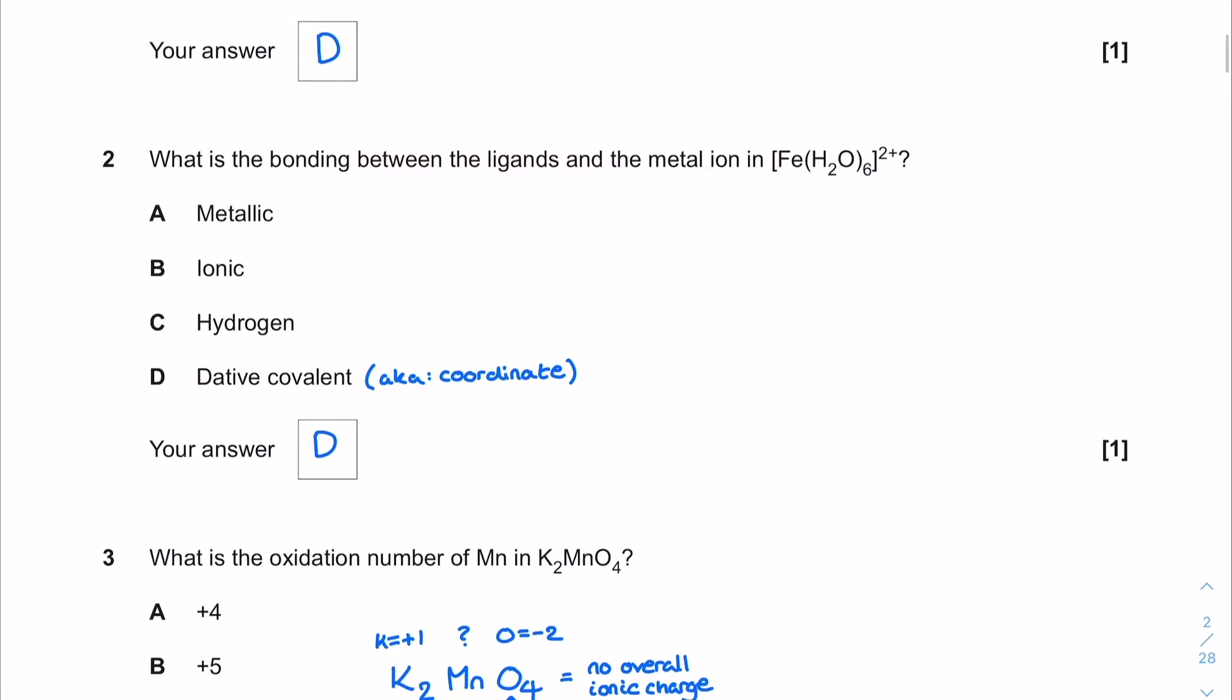Moving down to question two. This one is a matter of fact, this is from module 5 although they've hidden it a little bit here by calling the type of bonding between the ligands and the metal ion in that complex ion structure dative covalent. You would traditionally describe this as coordinate bonding when you study this in the specification. The type of bonding is dative covalent.